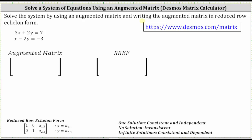Because we have a system of two equations with two unknowns, the augmented matrix is a two by three matrix. It is important to make sure the equations are in standard form, meaning the x and y terms are on the left and the constants are on the right.